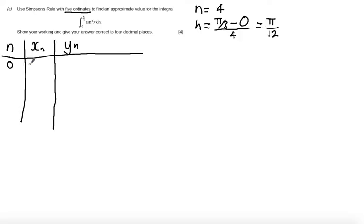n equals 0, xₙ will be equal to 0, we are at the lower bounds. n is equal to 1, xₙ will be equal to π/12. n is equal to 2, xₙ will be equal to 2π/12.